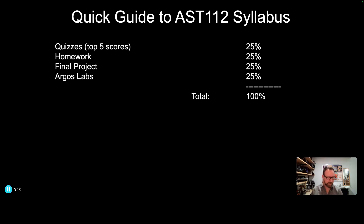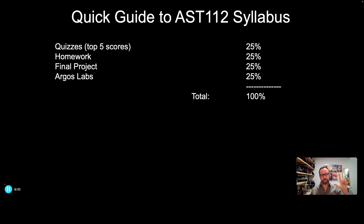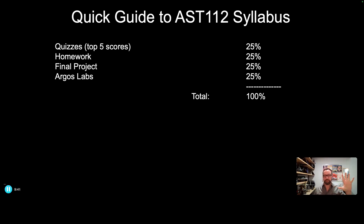Here's the grade structure of the class. The homework will be assigned out of the textbook — I'll show you how that's going to work in a moment. That'll be 25% of the grade. Every two weeks I'll give you a quiz based on what we've gone over. If all goes according to plan, there'll be eight quizzes by the end of the semester. I'm going to take your top five quiz scores, and that's what goes into your final grade.